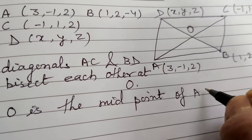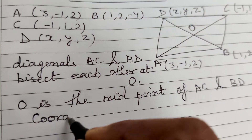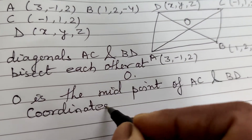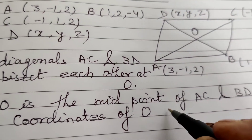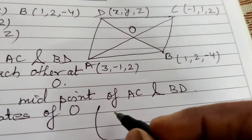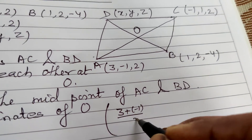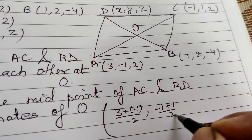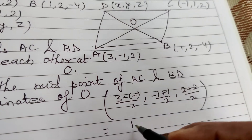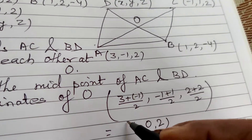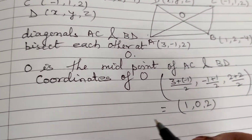Coordinates of O as midpoint of AC: x = (3 + (-1))/2 = 1, y = (-1 + 1)/2 = 0, z = (2 + 2)/2 = 2. So coordinates of O are (1, 0, 2).